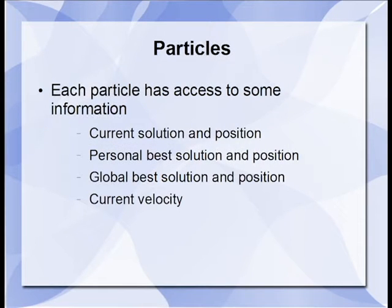Every particle that makes up the swarm has access to some information. Firstly, they know the current value of their solution and their current position, which is a solution to the problem the algorithm is trying to solve. Each particle keeps track of the personal best solution value it personally has achieved, and the position this was achieved. Each particle also has access to the global best solution value, and the positions at which this was discovered. Lastly, a particle is aware of its current velocity, that is how fast its position is changing.